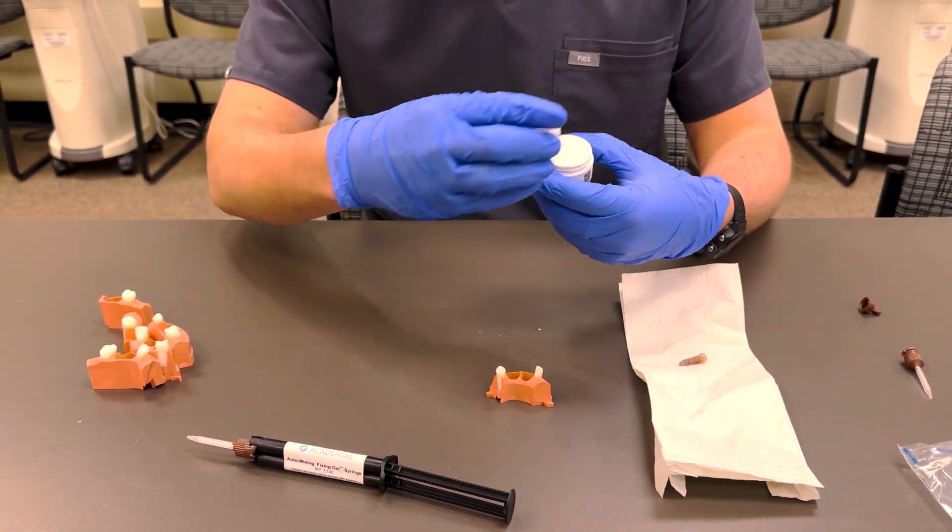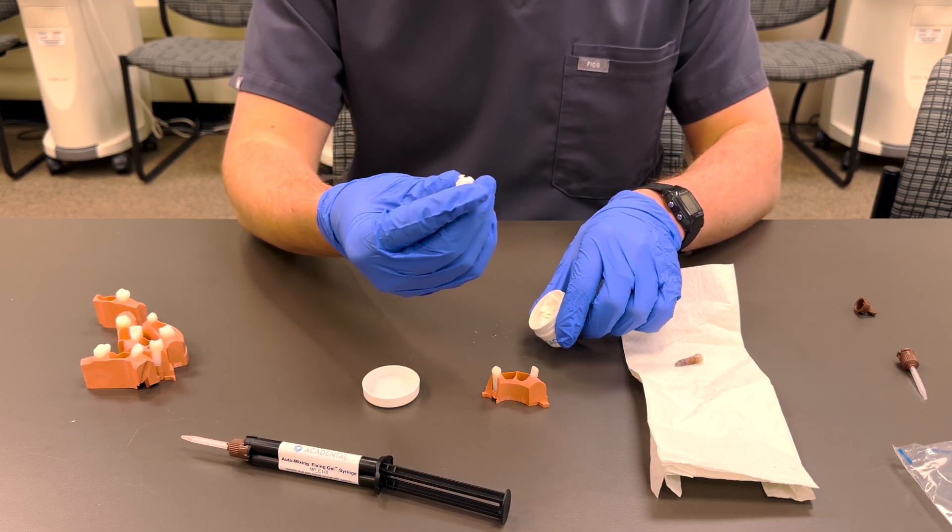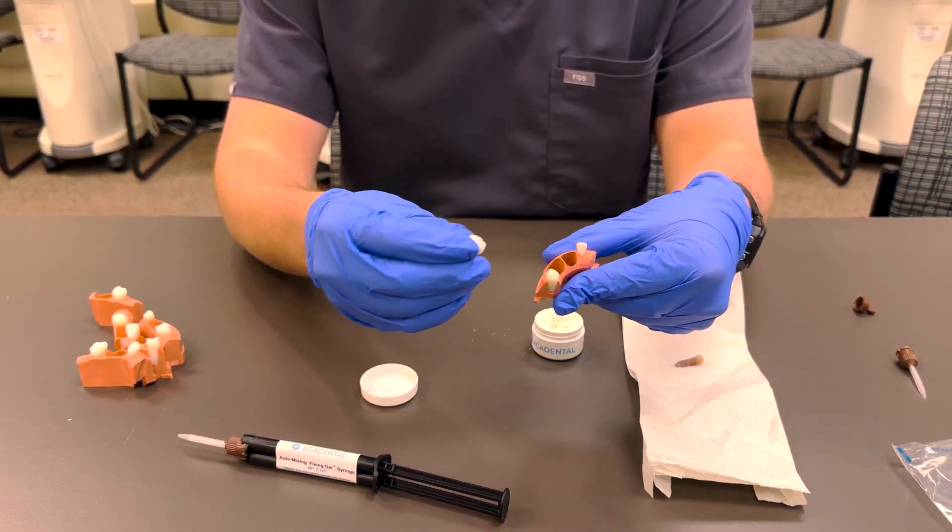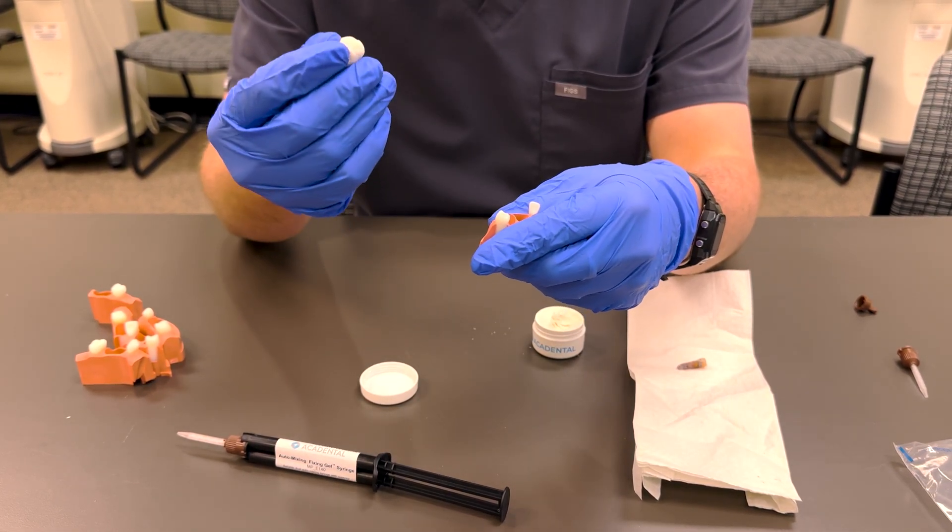What you'll do is take out your apex putty and scrape off some of this. It has a consistency like play-doh. You're going to fill the hole where you're mounting the tooth with this apex putty.